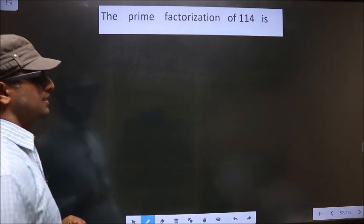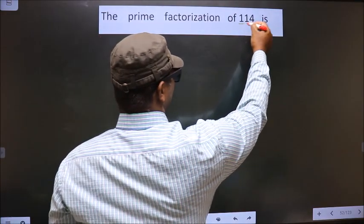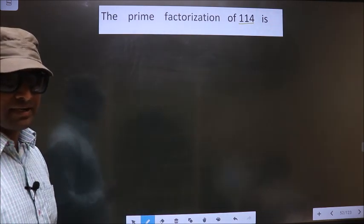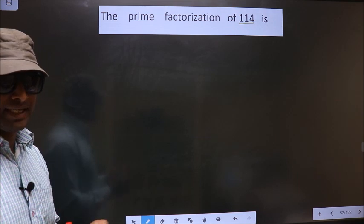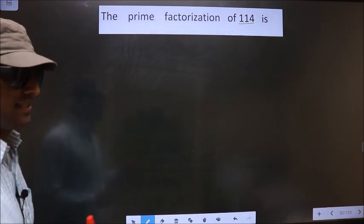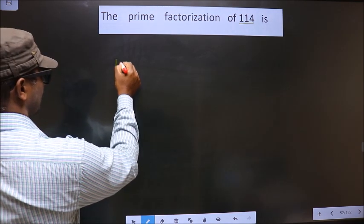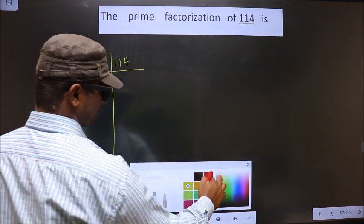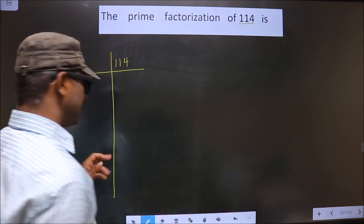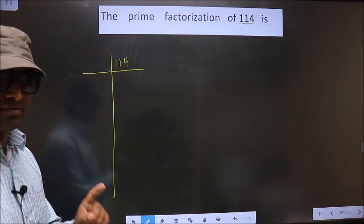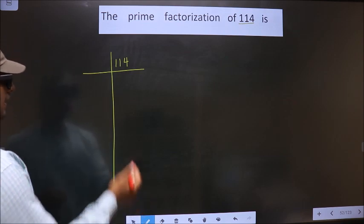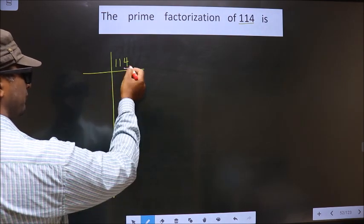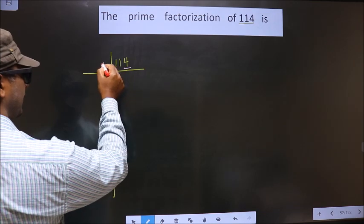The prime factorization of 114 is... To do prime factorization, first we should frame it in this way. This is your step 1. Next, in this number the last digit is 4, which is even, so we take 2 here.